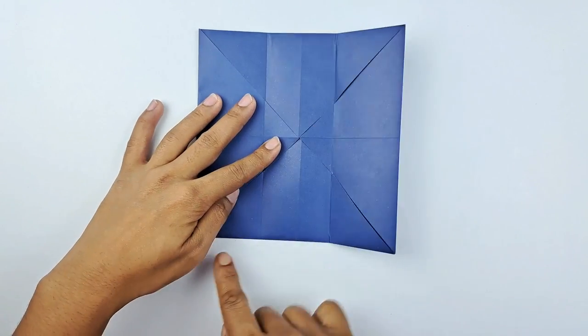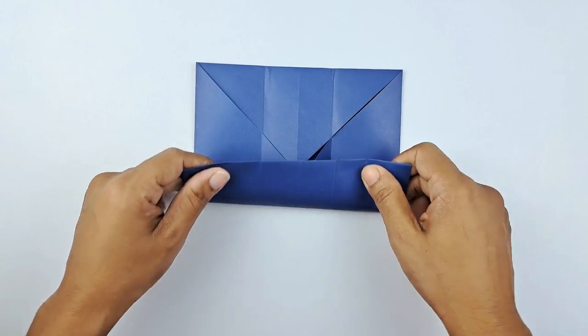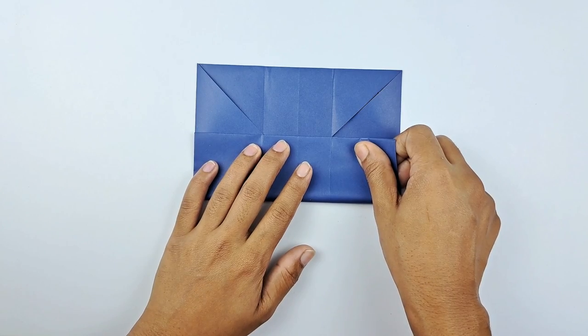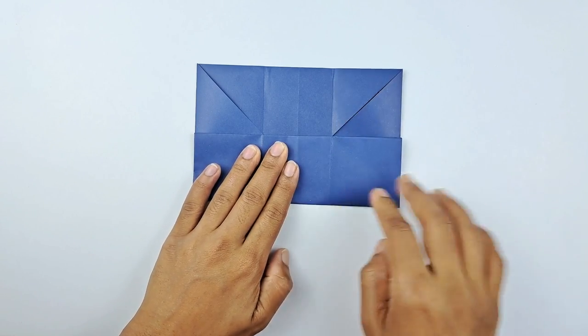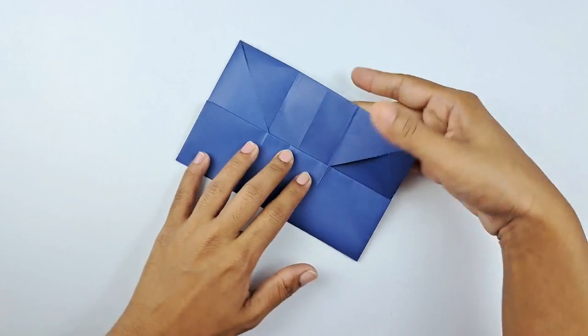And then we're going to fold to the middle, like this. And then fold over like this. Let's smooth down those edges.